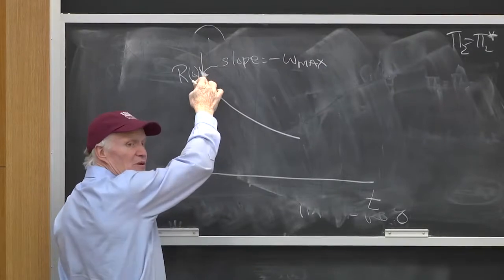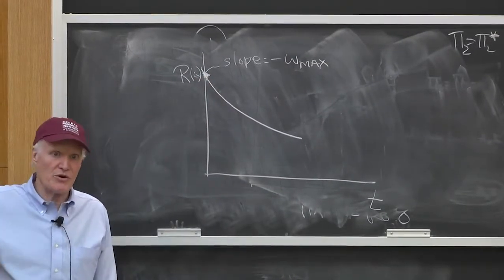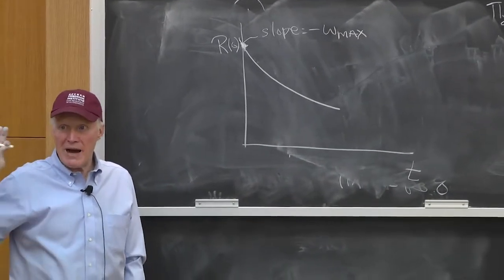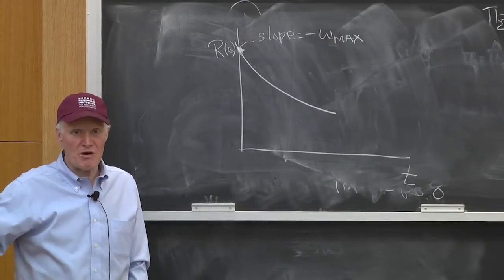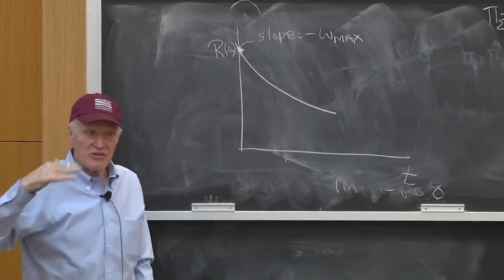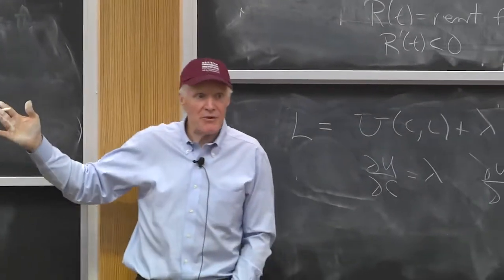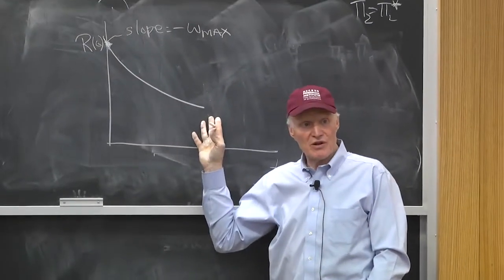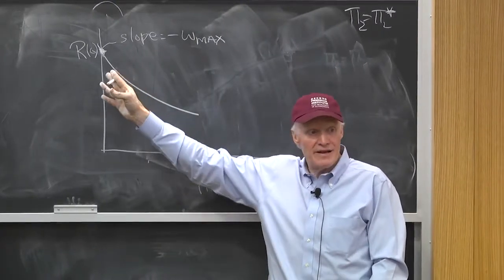So once I know R0, in fact, all I would need to know is the wage distribution, and I could just draw this whole curve. You can see how powerful this theory is. It has very strong predictions. That is, once I know the wage distribution, I can predict, without knowing anything else, what this curve is going to look like, not just qualitatively, but quantitatively.